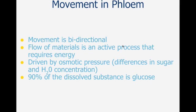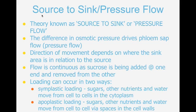Now we've looked at the movement of water in the xylem, let's look at the movement of substances in the phloem. In the phloem, movement is bi-directional — it can go either up or down, unlike the xylem where movement is all upward. The flow of materials is an active process requiring energy. It is driven by osmotic pressure — the differences in sugar and water concentration on either side of the cell. However, the process still requires energy, and 90% of the dissolved substances transported in the phloem is glucose, a product of photosynthesis.